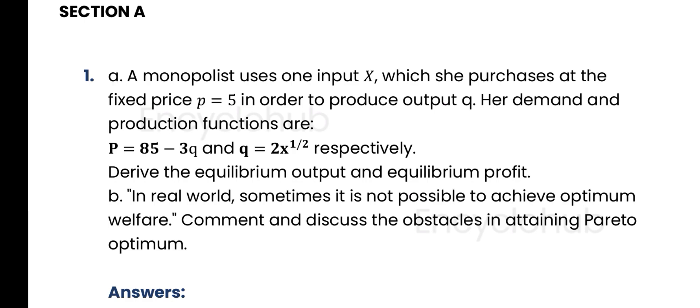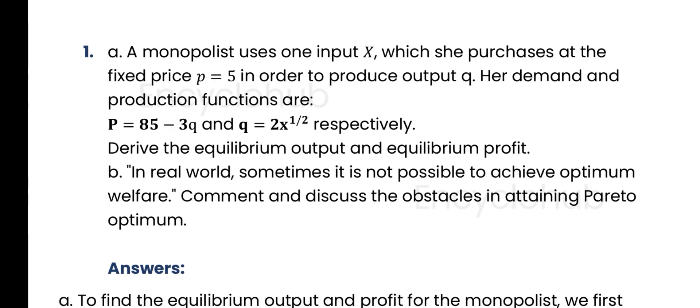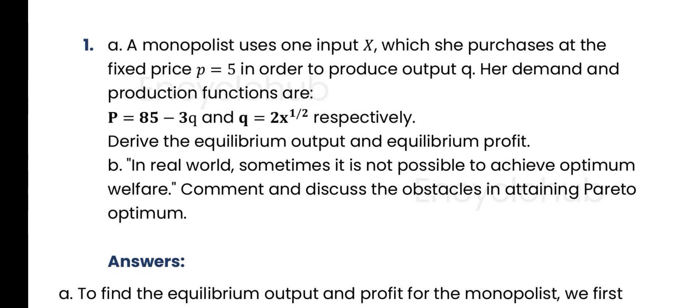Question number one says that a monopolist uses one input X, which she purchases at the fixed price equal to five, in order to produce output Q. Her demand and production functions are given here. Derive the equilibrium output and equilibrium profit.